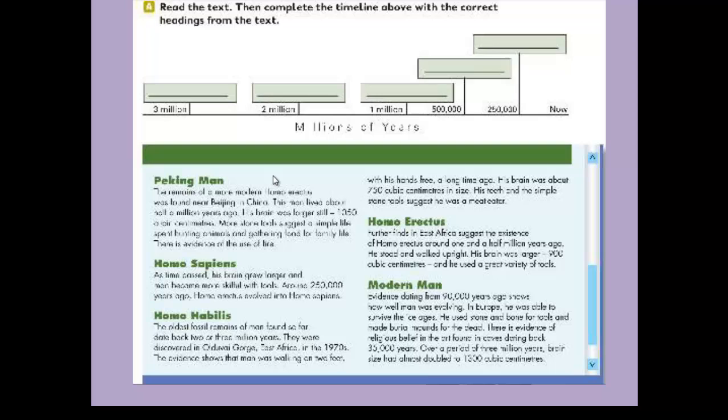Modern Man: Evidence dating from 90,000 years ago shows how man was evolving in Europe. He was able to survive the ice ages in Europe. He used stone and bone for tools and made burial mounds for the dead.